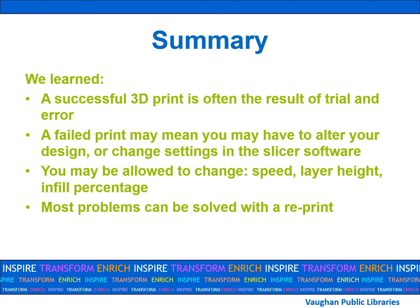Let's recap this lesson. We learned that a successful 3D print is often the result of trial and error. Sometimes you may have to go back to the drawing board and make changes to your original design, or you'll need to make changes to the slicer software. With staff permission, you can change the speed, infill percentage, or the layer height. Most of the time, the problem will be solved with a single reprint.